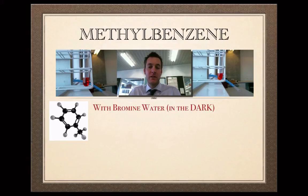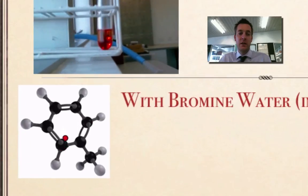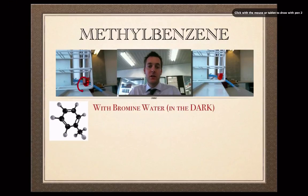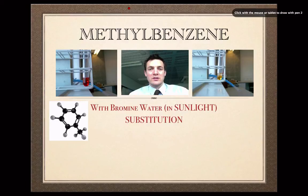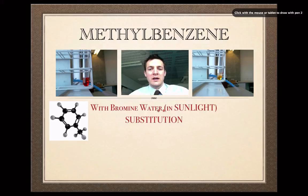Let's look at the reactions of methyl benzene now. There's a model of it here, showing its alternating double bonds and the methyl group attached to it. When we were in the dark, not a lot of change — the bromine water stayed its orange colour. The equation for the reaction between methyl benzene and bromine water shows again a substitution reaction. In terms of observations, it lost its dark red colour, which showed the bromine water was reacting, but it would only happen in sunlight. This is characteristic of a substitution reaction.